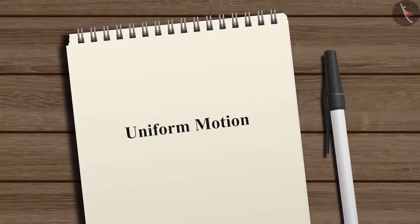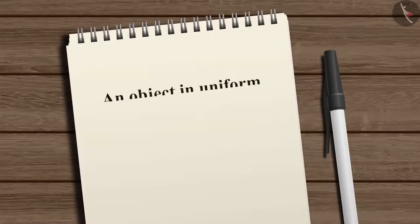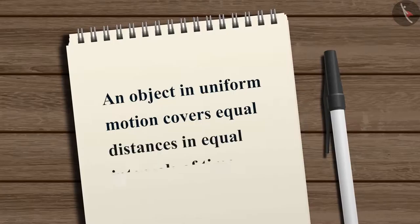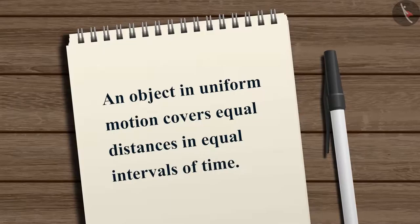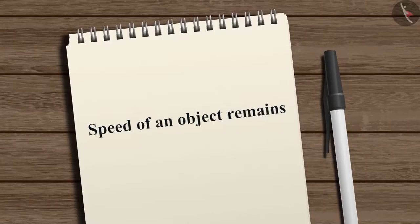This type of motion is known as uniform motion. An object in uniform motion covers equal distances in equal intervals of time. It has to be noted that the speed of an object remains constant in uniform motion.